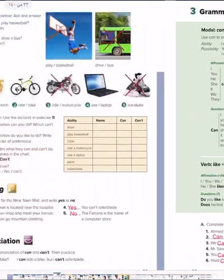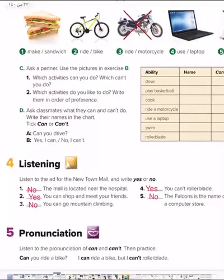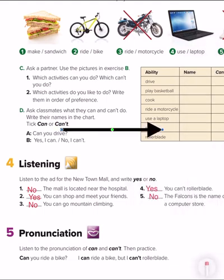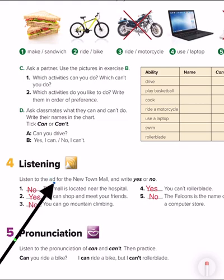Yeah, let's now move to the second page here. Look, what do we have here? Listening. Okay. Listening to the advertisement for the new town mall. Write yes or no. So we will listen to advertisement for the new mall. So we will write yes or no next to these sentences. Okay. So now I will turn on the audio.